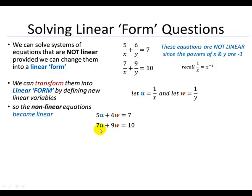And then also, instead of 7 over x, I have 7 times u. And instead of 9 over y, I have 9 times w. And this is definitely a system of linear equations. But remember, our variables are now u and w.